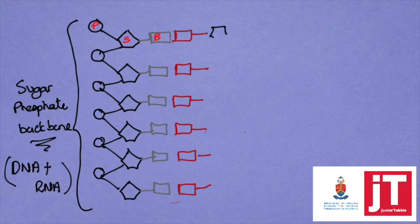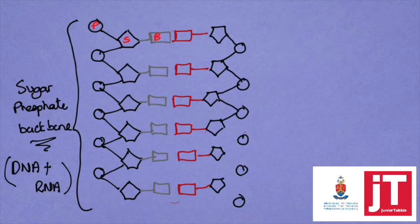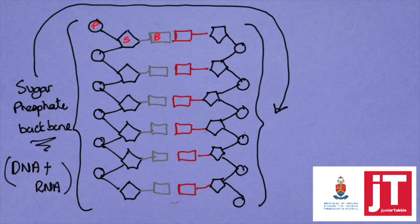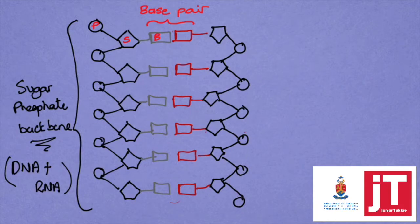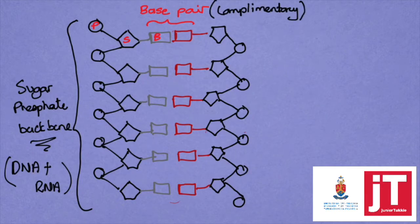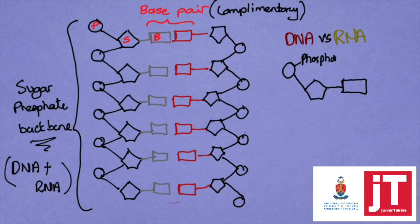We have a second sugar phosphate backbone with what we call complementary bases pairing alongside. We find this base pairing very unique as well because they don't just pair with any other base. They're very unique base pairings when we look at DNA — they're always going to be complementary. Now looking at DNA versus RNA, our complementary bases are slightly different, but the basic structure of a nucleotide remains the same.